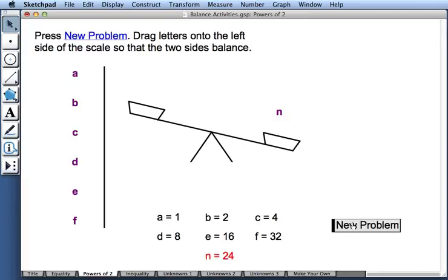When I press new problem, I get a new value of N always between 1 and 63. And the amazing fact is that it's always possible to balance N using some combination of just these six letters on the left side of the balance.